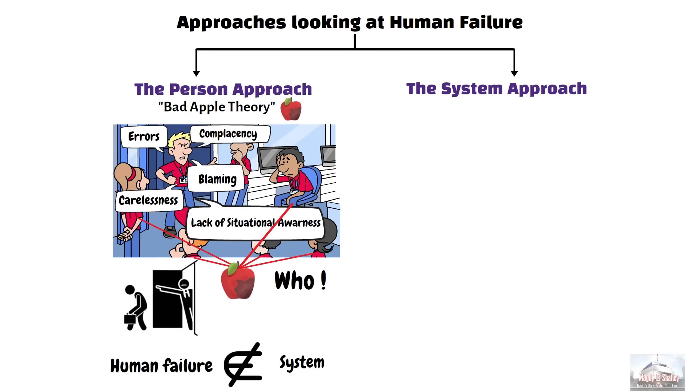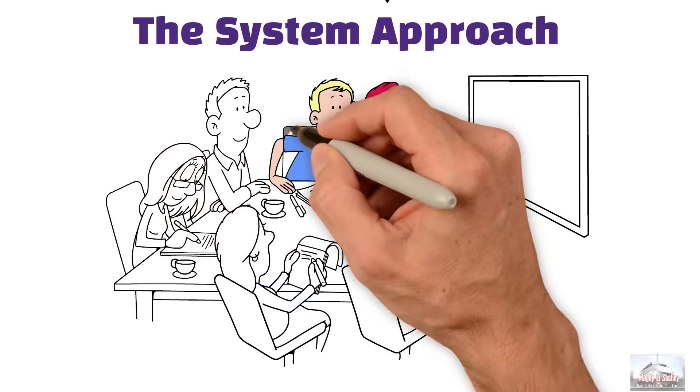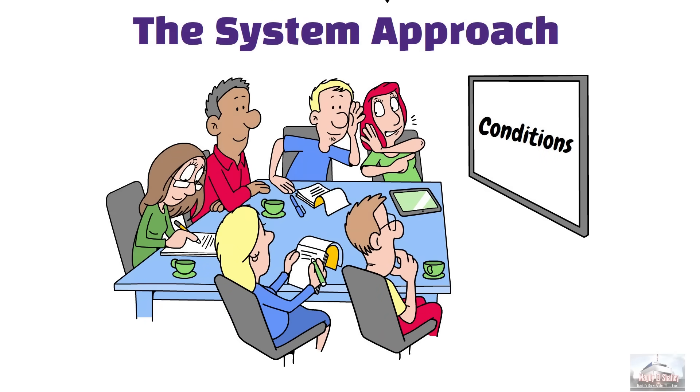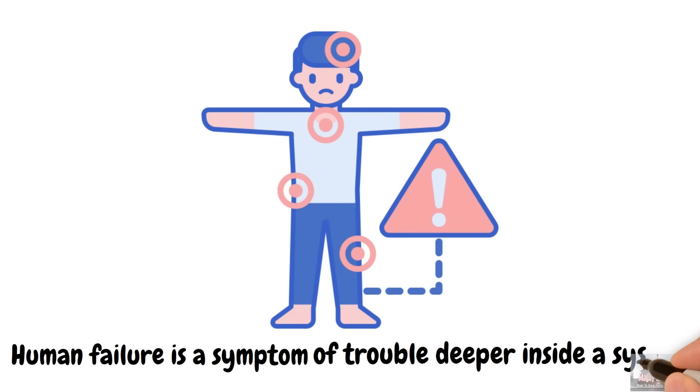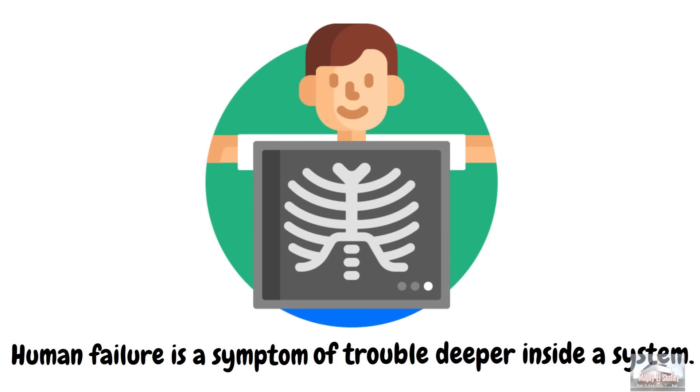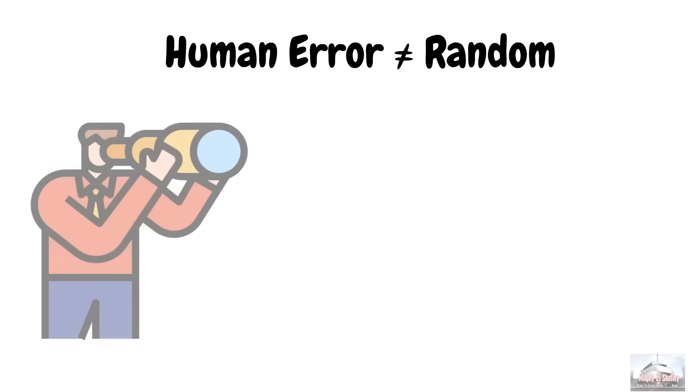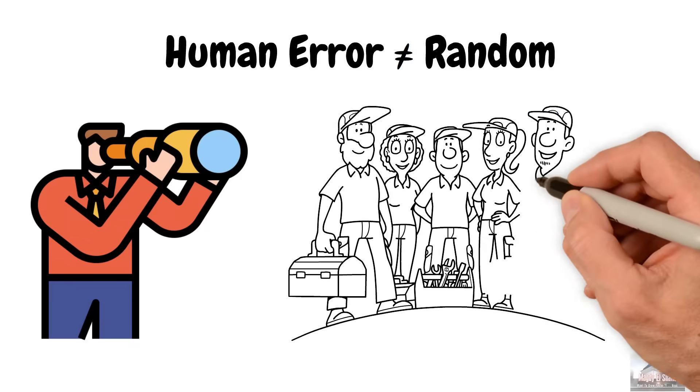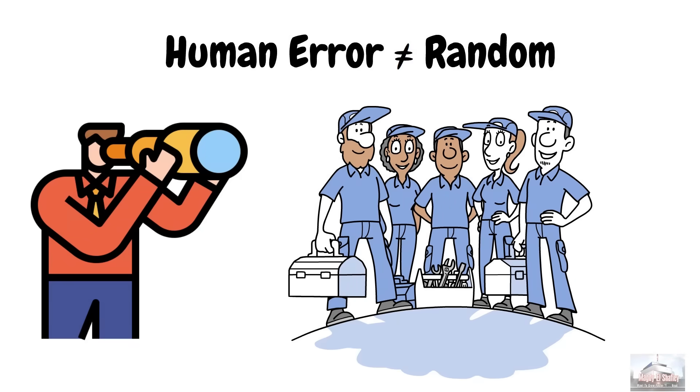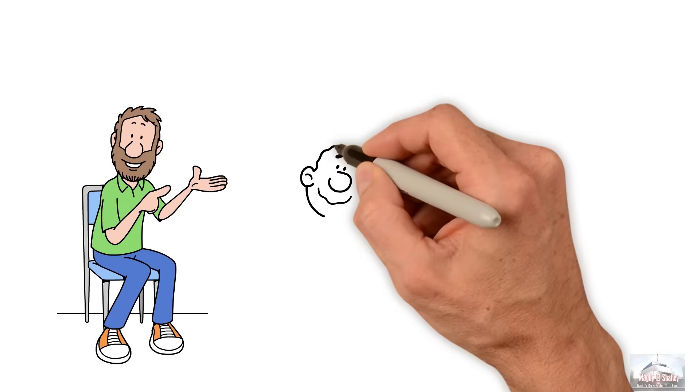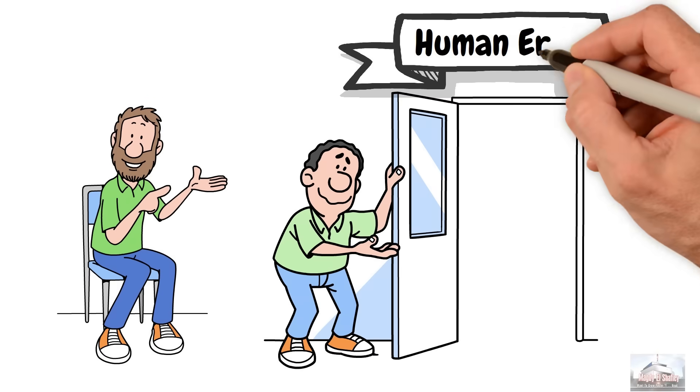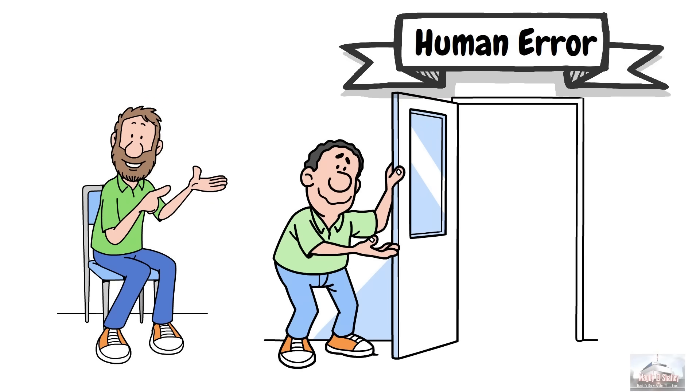Whereas, on the contrary, the system approach concentrates on the conditions under which individuals work. Here, human failure is a symptom of trouble deeper inside a system. And human errors do not come unexpectedly. Human error here is not random. It is systematically connected to features of people's tools, tasks, and operating environment. Within this approach, human error is not the conclusion of an investigation. It is the starting point. Human errors here are seen as consequences rather than causes.